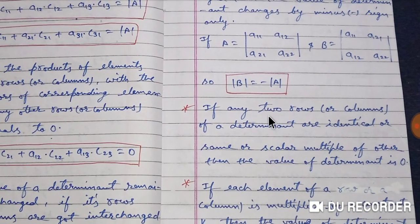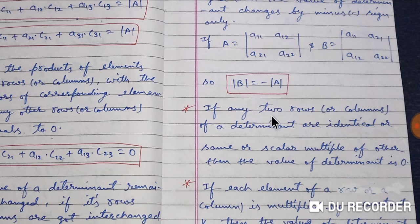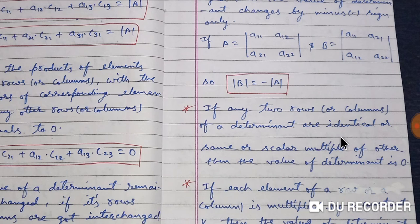Another property states: if any two rows or columns of a determinant are identical, or if one is a scalar multiple of the other, then the value of the determinant is zero. These are very important properties for solving determinant problems.